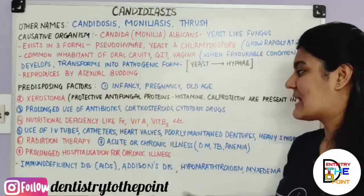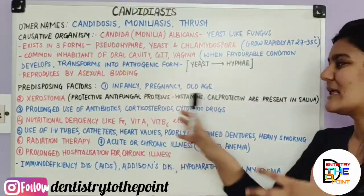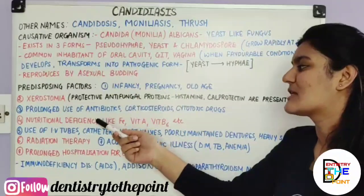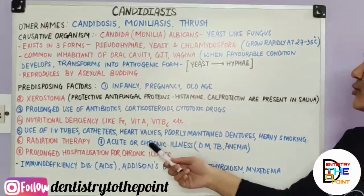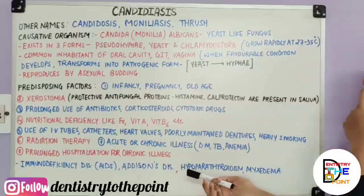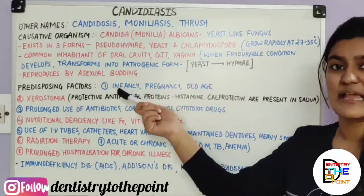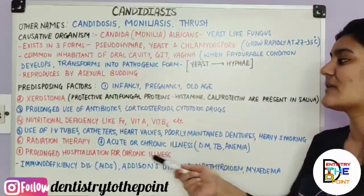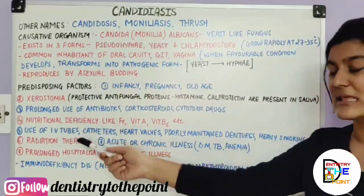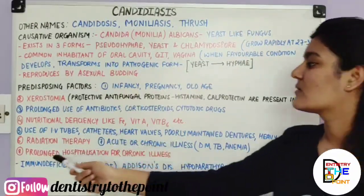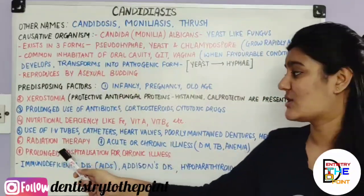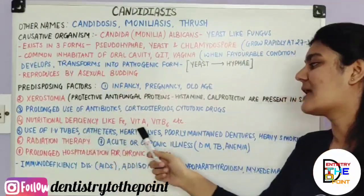All these factors represent acute or chronic illnesses. You may be taking medicines or suffering from nutritional deficiencies — these are all manifestations of underlying illness. When illness requires treatment, it may lead to prolonged hospitalization, radiation therapy, or use of IV tubes, catheters, and heart valves — all of which are additional predisposing factors for Candidiasis.